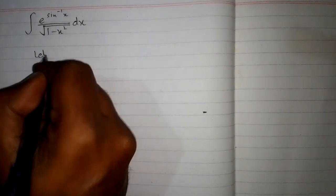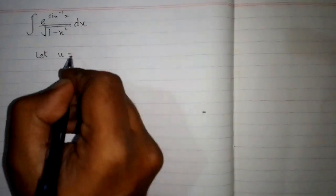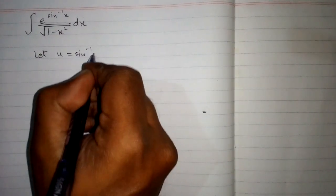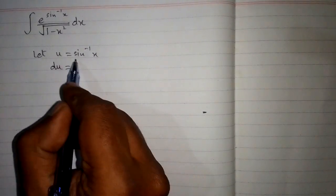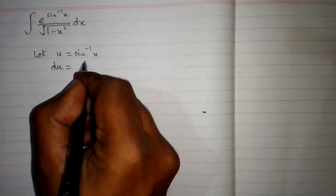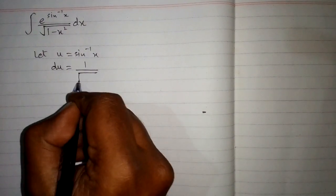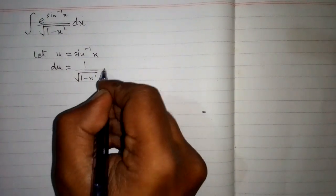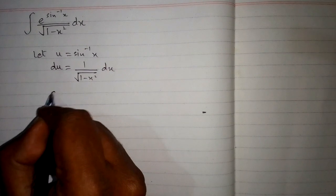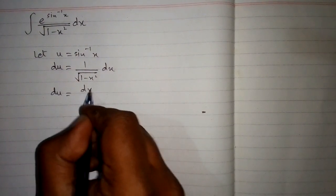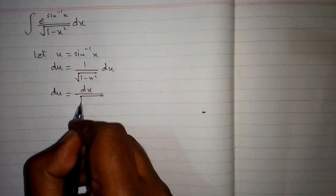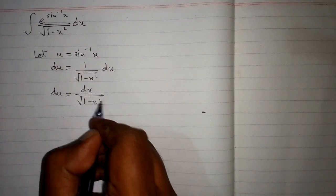So first we will let u equal sine inverse x. Then the differential du is the derivative of sine inverse x, which is 1 upon the square root of 1 minus x square dx. This can be written as du upon the square root of 1 minus x square.